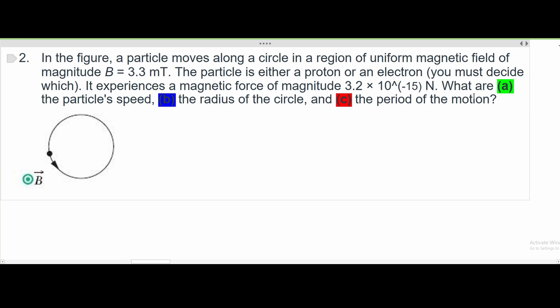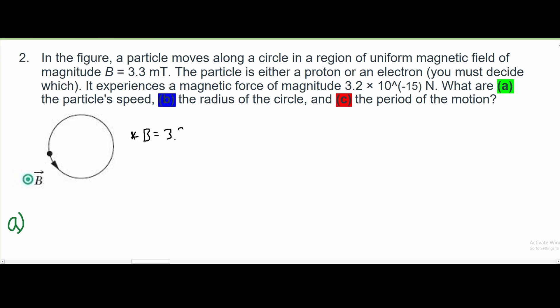We're asked what is the particle speed for part A. Before we start the problem, we should write down what we're given. B is equal to 3.3 mT, which will have to be converted to T later. We have a magnetic force F_B equal to 3.2 times 10 to the negative 15 newtons.